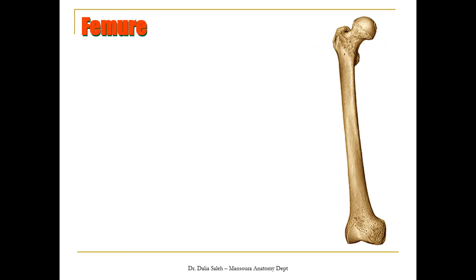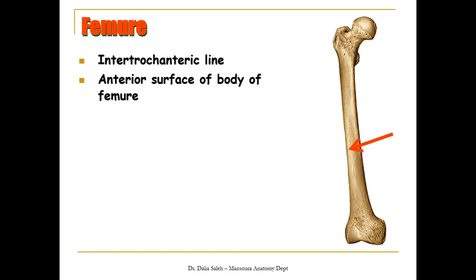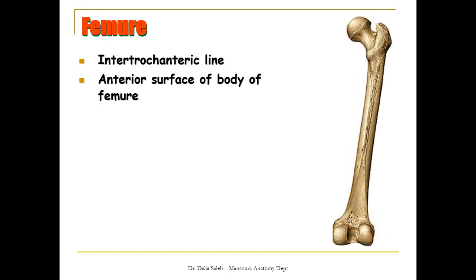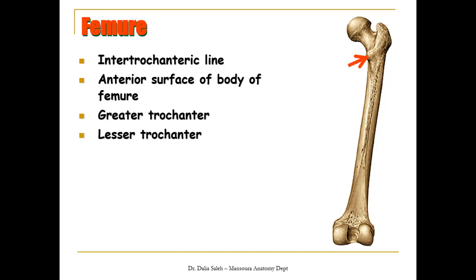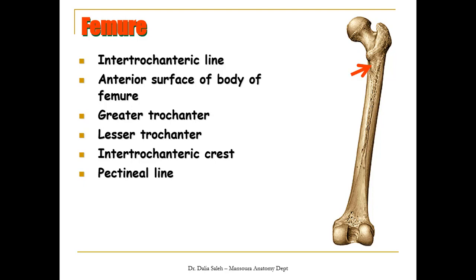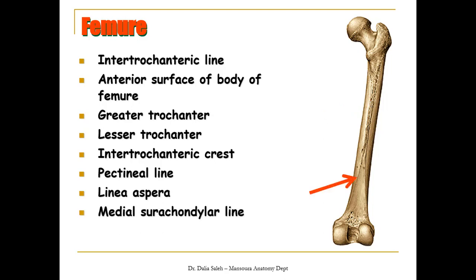This is the right femur seen from its anterior aspect. We have here the intertrochanteric line, which extends between the greater and lesser trochanters of the femur between the neck and the body. This is the anterior surface of the body of the femur. If we rotate the femur and look at its back, we see the greater trochanter and the lesser trochanter, with the intertrochanteric crest between them. Extending from the lesser trochanter downwards is the pectineal line, and the rough posterior edge is called the linea aspera, which splits inferiorly into lateral and medial supracondylar lines terminating at the adductor tubercle.